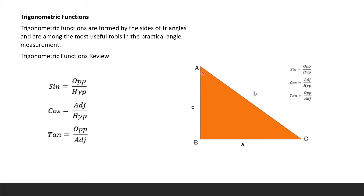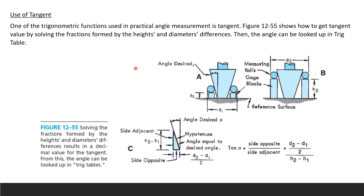Concentrating on angle A: sine A is opposite divided by hypotenuse, cosine A is adjacent divided by hypotenuse, and tangent A is opposite divided by adjacent. For the use of tangent, one of the trigonometric functions used in practical angle measurement is the tangent. Here is a figure showing you how to get the tangent value by solving the fractions formed by the heights and diameter differences, so that the angle can be looked up in your trig table.